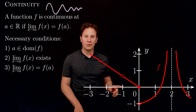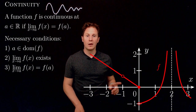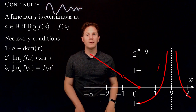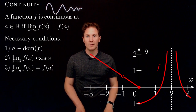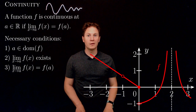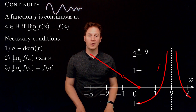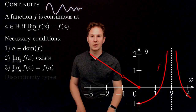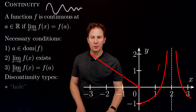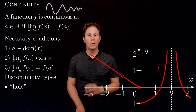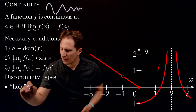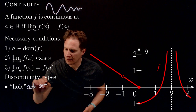The first discontinuity you can see at x equals negative one — the function is not defined there, so it is the first condition that breaks down. Negative one is not in the domain of our function, so it is not continuous at x equals negative one. You see how there is a hole in the graph of the function, so this discontinuity type we call a hole discontinuity.